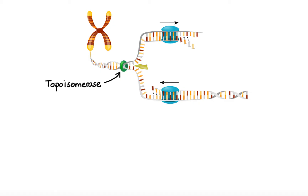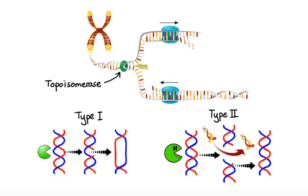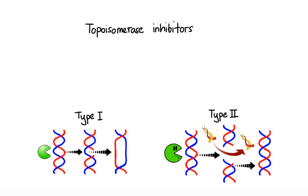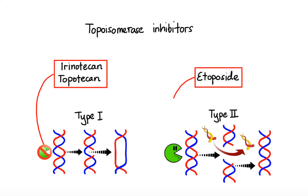Different topoisomerases carry out different functions. Topoisomerase type 1 cuts one strand, then passes the intact strand through the cut and reseals the gap, whereas topoisomerase type 2 cuts both strands of the DNA, creating a gate through which a second segment of the double helix is passed. These DNA topoisomerases are the target of anti-cancer drugs collectively known as topoisomerase inhibitors. Drugs such as irinotecan and topotecan selectively inhibit topoisomerase type 1, and drugs such as etoposide selectively inhibit topoisomerase type 2.